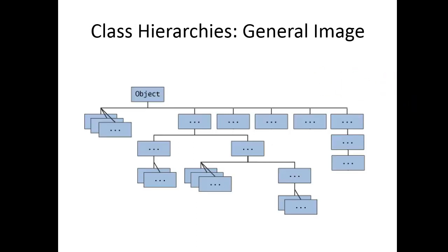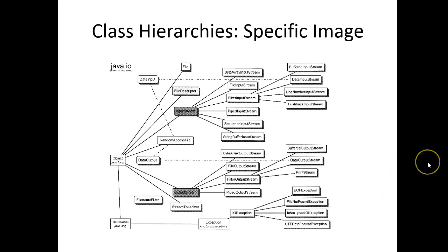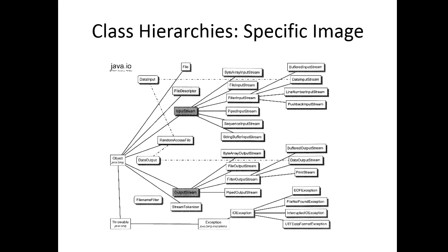Here's a general image of what a hierarchy looks like, with object at the root of the Java hierarchy and all these different subclasses extending below it. We can also look at an actual example with the java.io package — all the classes contained within java.io. This hierarchy is written from left to right, with object at the root. No matter what class you pick, you can trace back to object. For example, pushback input stream is a filter input stream, which is an input stream, which is an object. The dotted lines represent something called an interface, a concept we're not quite ready to discuss, and the darkened classes are abstract classes, which we'll talk about a little later.